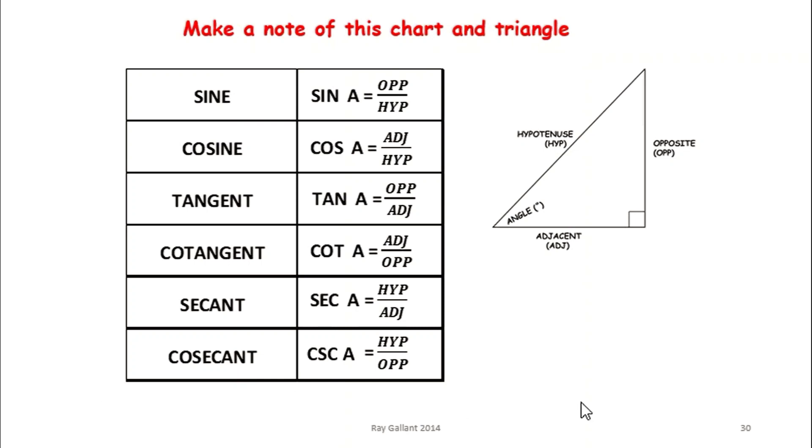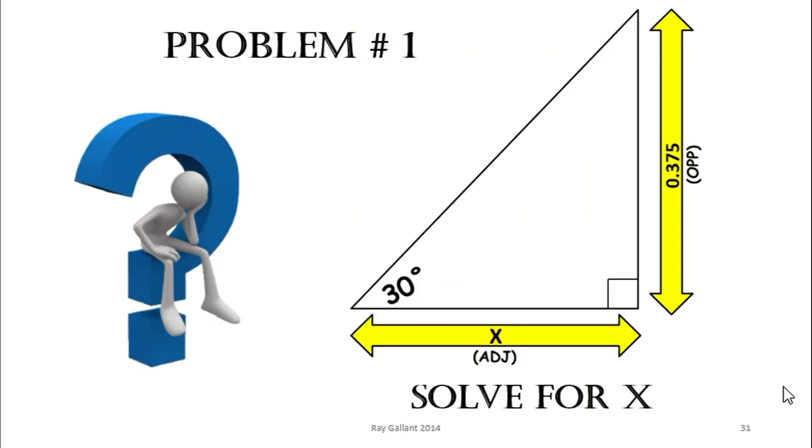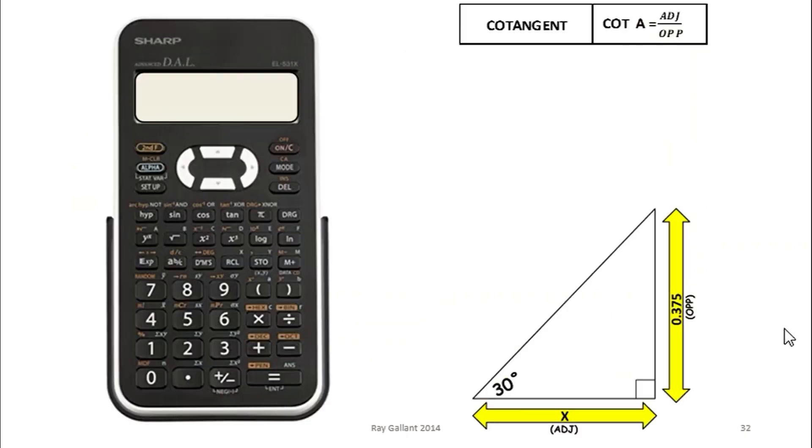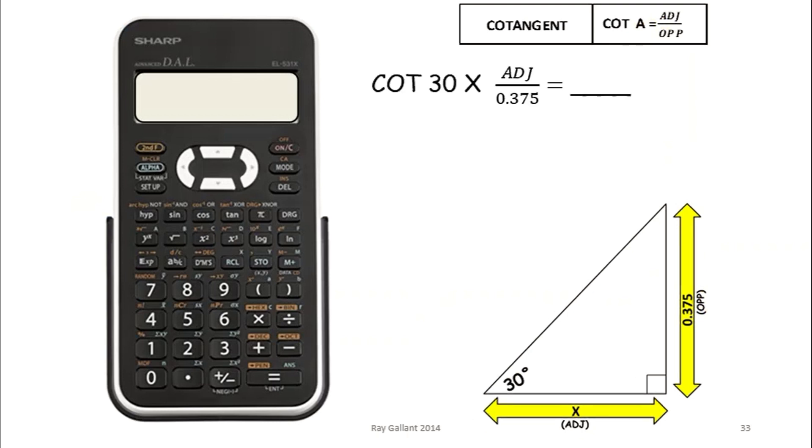Okay using our chart here what we have is we have this angle here and we have the opposite angle and what we want to find is our adjacent length. So therefore what we find we always put on top. So we want to find adjacent over opposite. So we go down our chart here and we find adjacent over opposite. So we're going to use cotangent. Here's our problem 30 degrees 0.375. We're going to be using cotangent. So cot30 times adjacent over opposite.